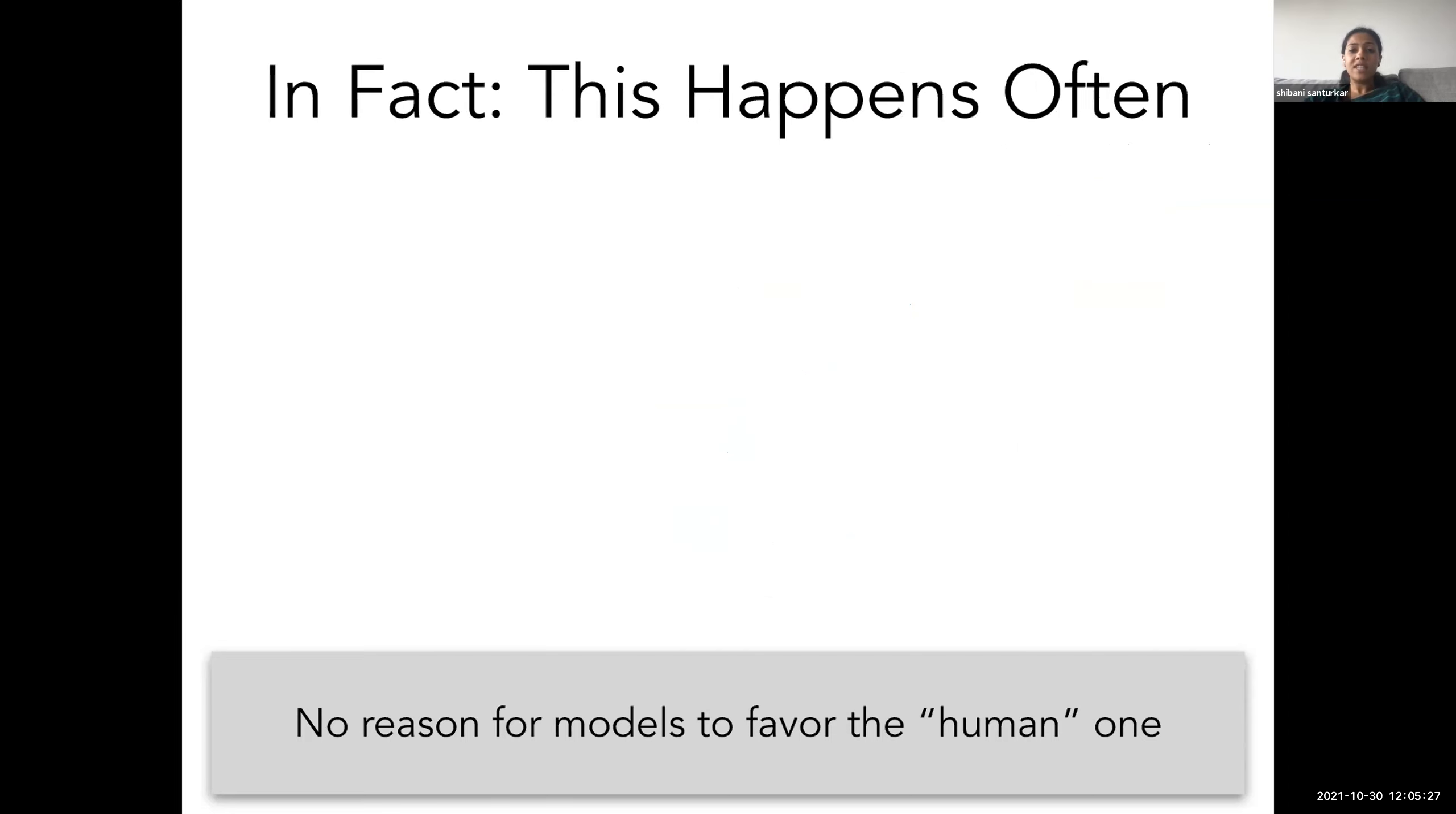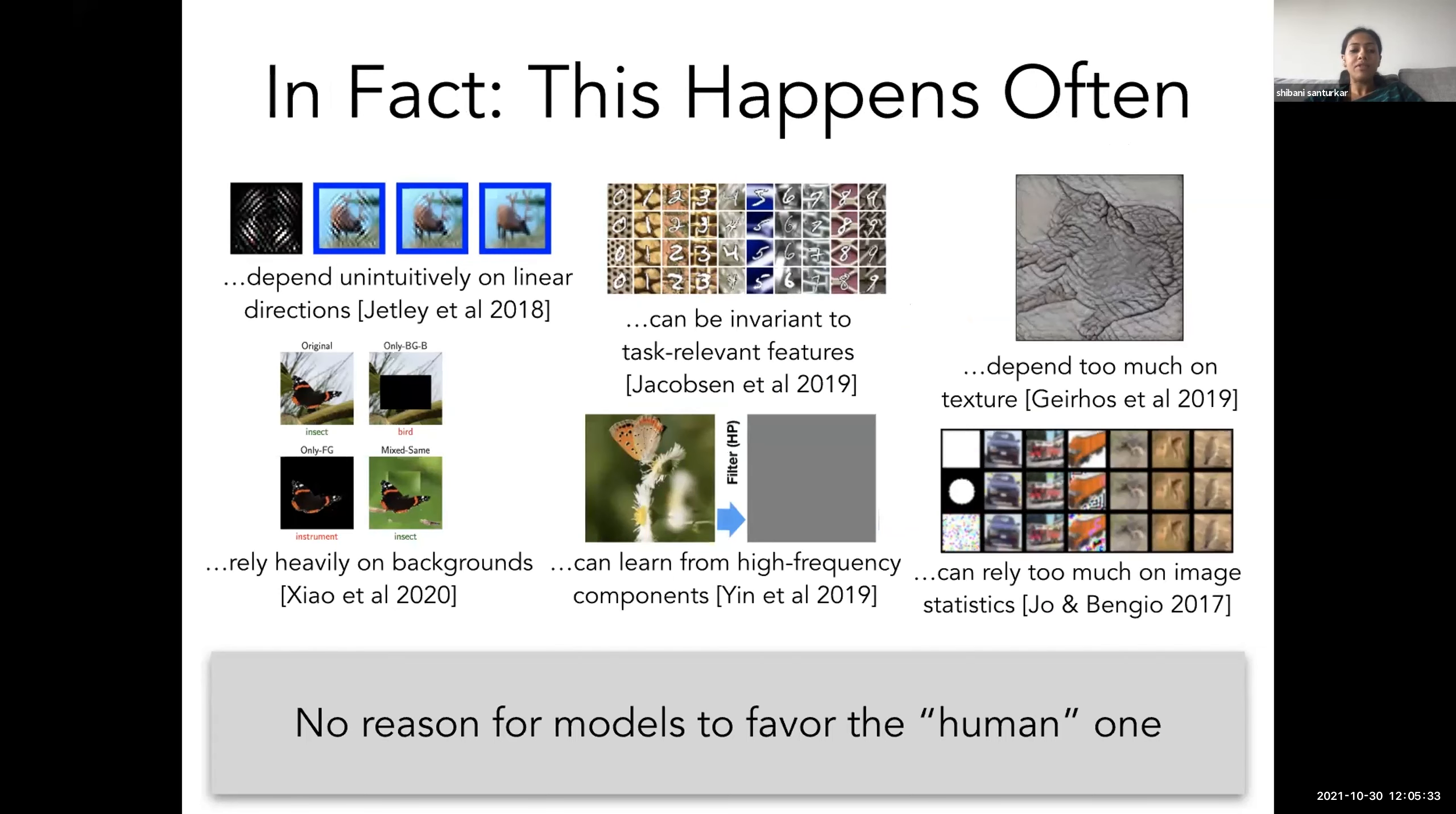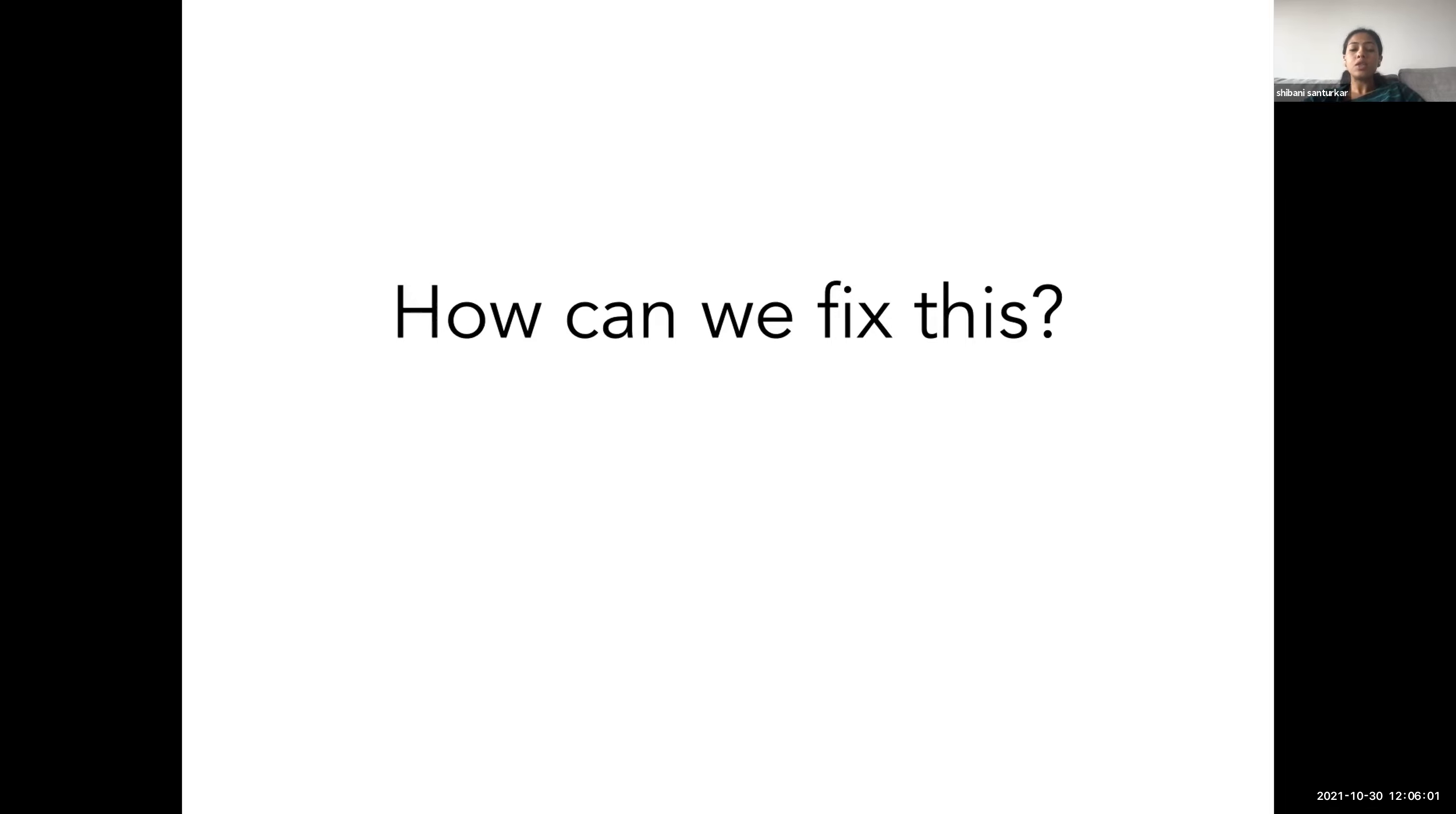We find that as a consequence of this, standard models actually end up relying on these brittle and unreliable features in the data. And this is one of the leading causes for the existence of adversarial examples. However, this issue is not just limited to adversarial examples. And this turns out to happen very often where standard models rely on other unreliable features in the data, such as background or high frequency information or texture information to make their predictions. And after all, if the models are relying on such brittle features to make their predictions, it's likely that their performance on benchmarks is not going to really be reflective of how well they'll perform in the real world. So a big question that I've been asking in my research is how do we go about fixing this? And one way we can do this is focusing not only on what models predict or how accurately they predict the labels, but on why they make these predictions.